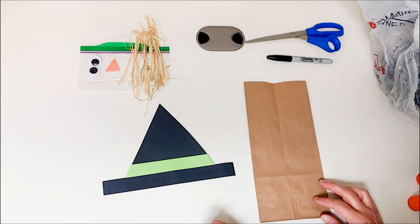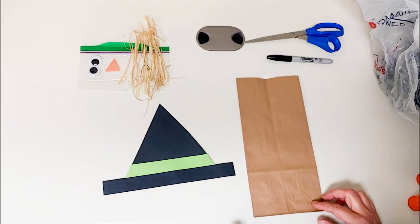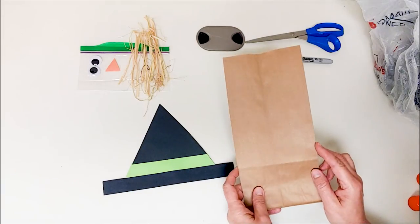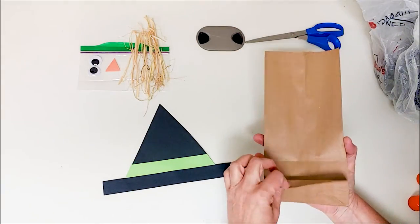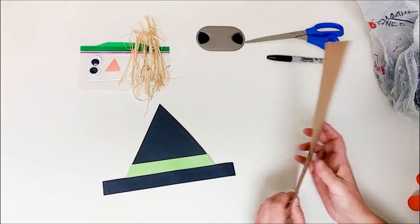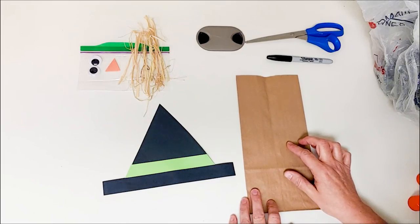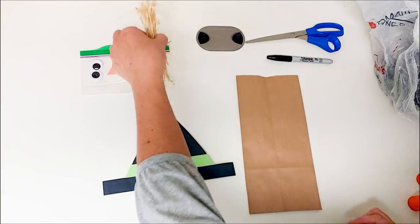Okay, so the next thing we're going to do is we're going to glue the hair onto the brown paper bag. And when you have your brown paper bag, make sure that the part with the little flap is facing down. Okay, so I'm going to grab my hair.